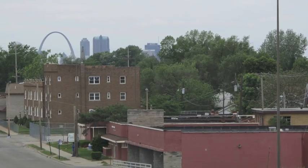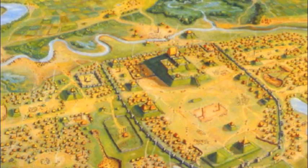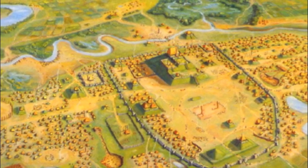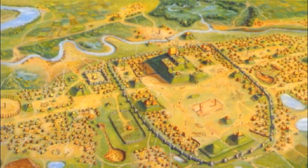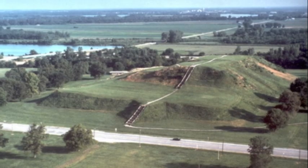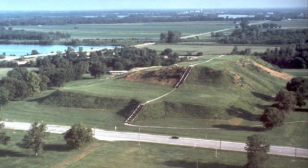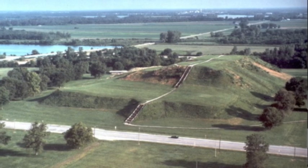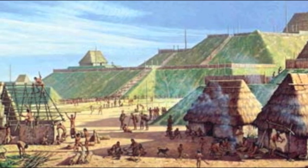About a thousand years ago, on the floodplain of the Illinois River across from the modern city of St. Louis, there appeared really the first North American city. We call it Cahokia. It's a massive site that covers five square miles and involves thousands of people coming together.